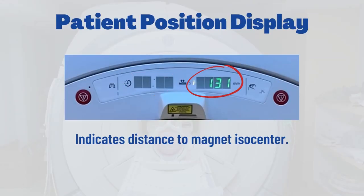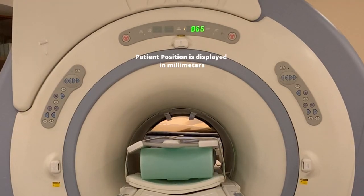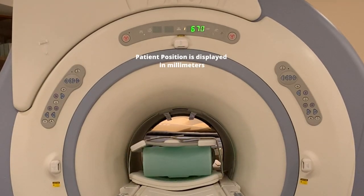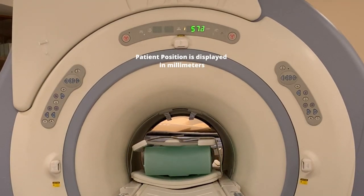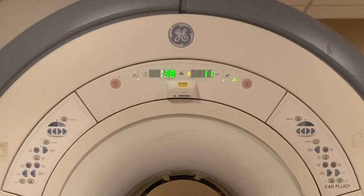The set of numbers to the right of the MRI scan countdown timer is the patient position display. This LED indicator fills multiple roles, but overall this number displays the distance of the patient cradle to known positions on the MRI scanner. During the MRI scan procedure, this number will move up and down corresponding to the patient distance from the isocenter.